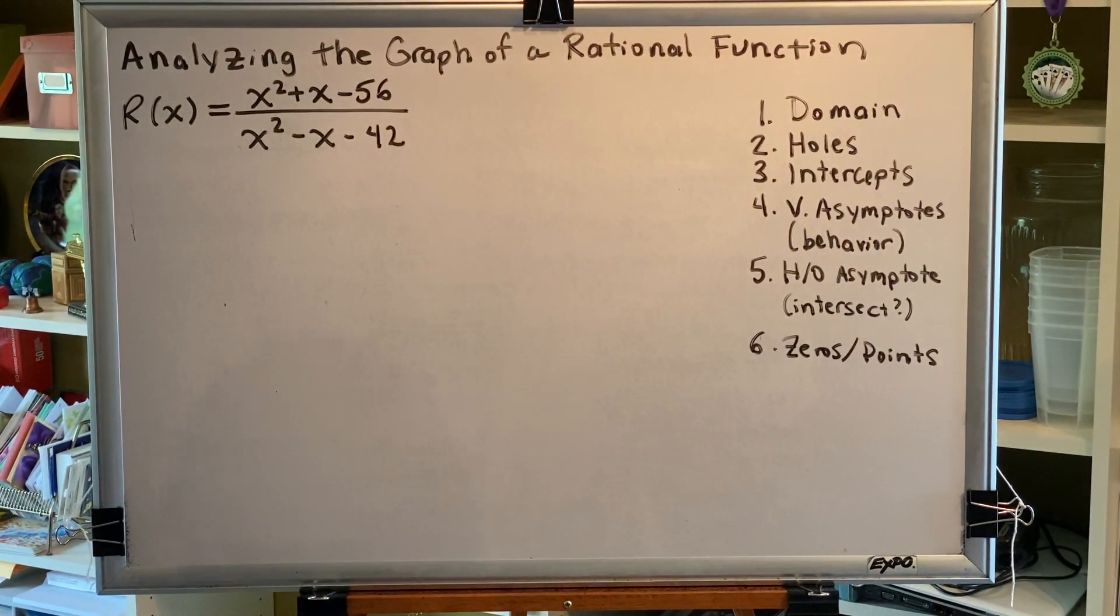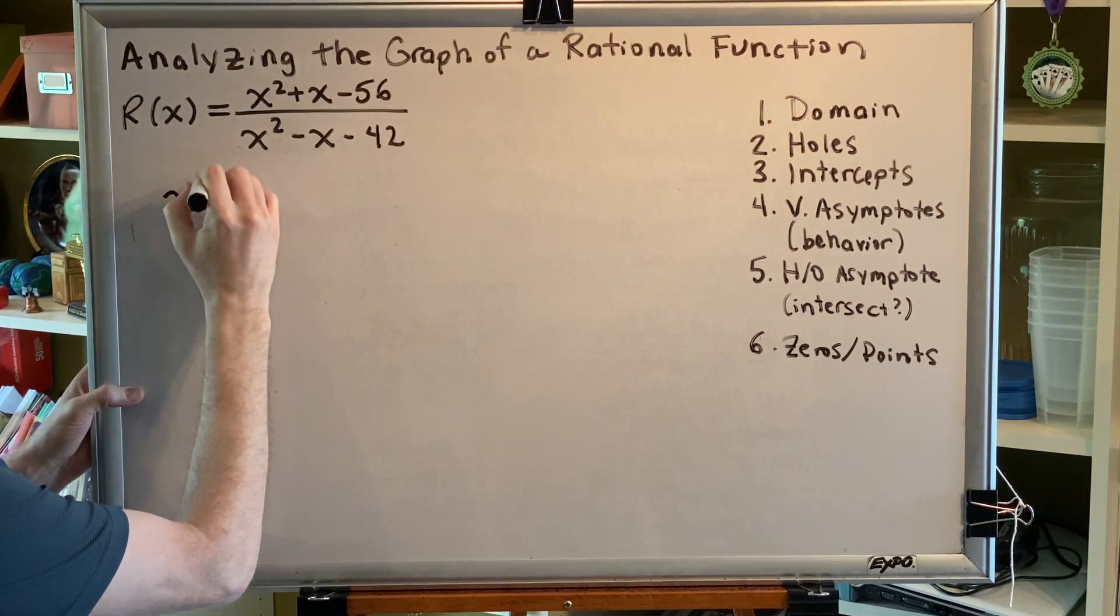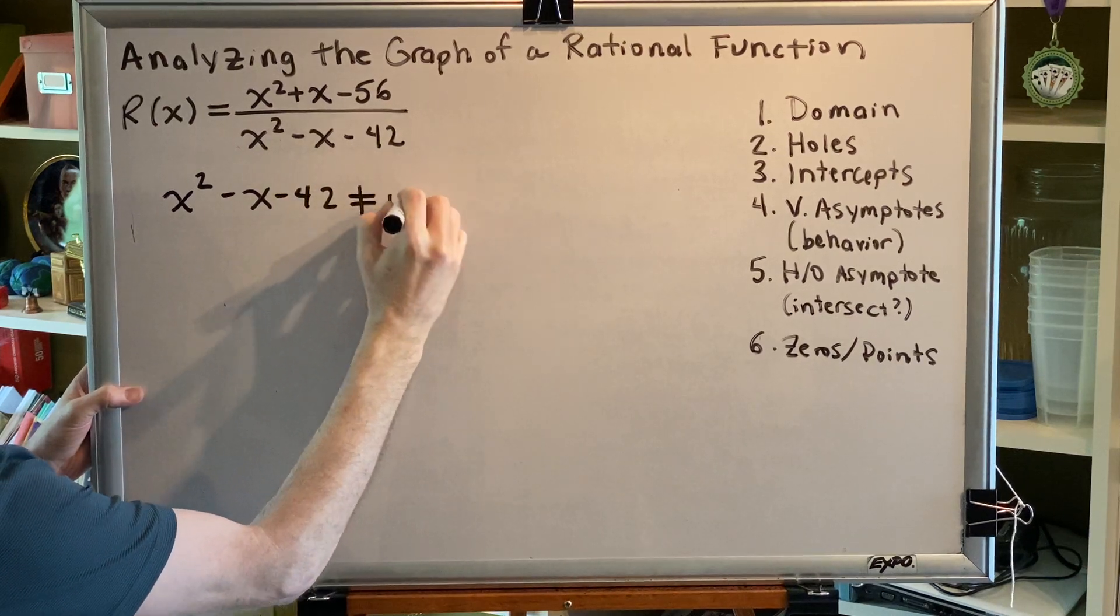Step one, domain. With domain we are only concerned with the denominator. So we say that x squared minus x minus 42 is not allowed to be equal to 0.